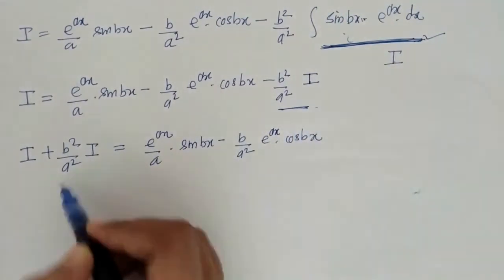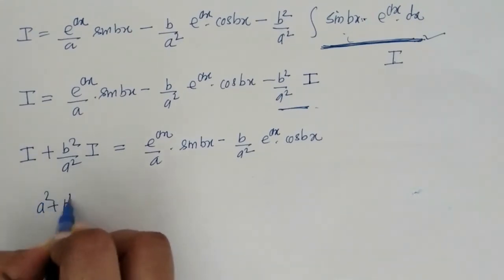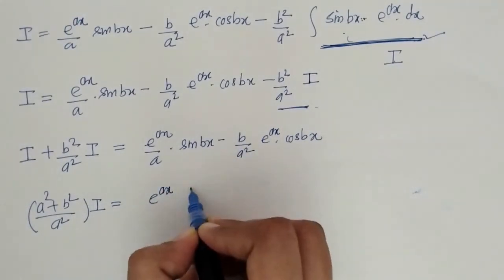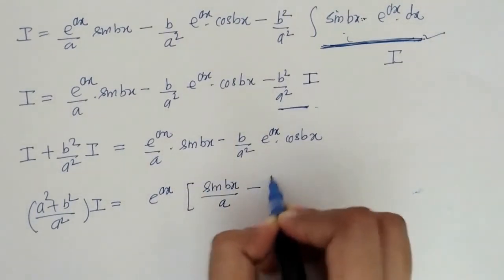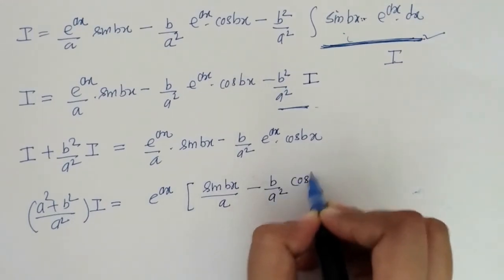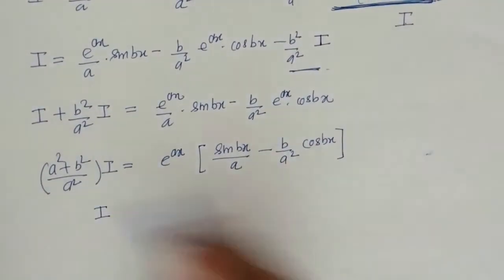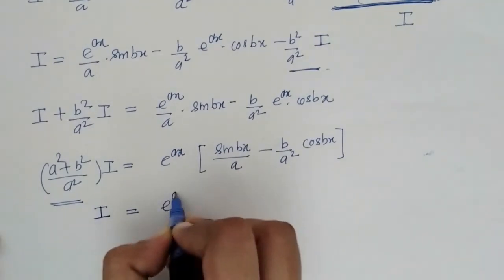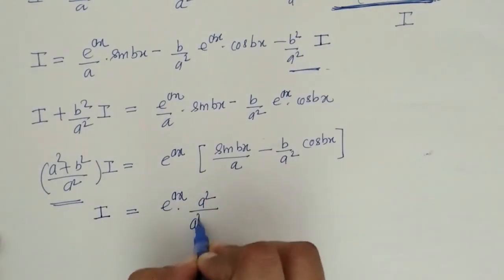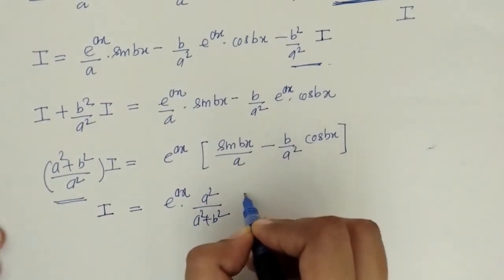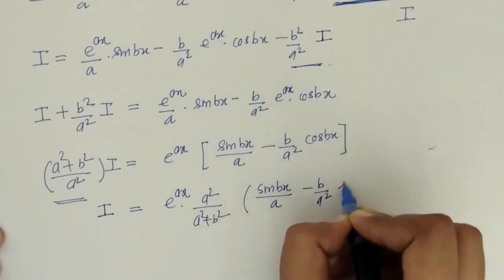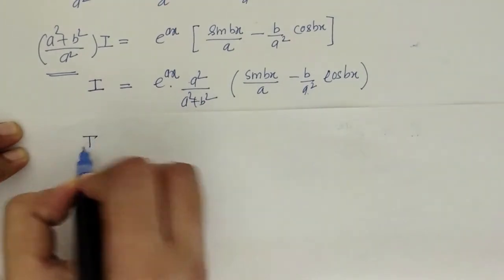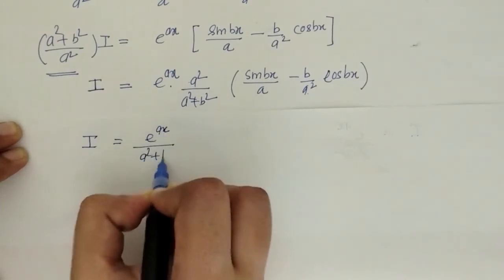After shifting the I term to the left side and simplifying, we factor out e^(ax). Inside the bracket we have sin(bx)/a and b/(a²)·cos(bx). We then shift the constant factor to the other side, giving I = e^(ax)·a²/(a² + b²), multiplied by the bracket.